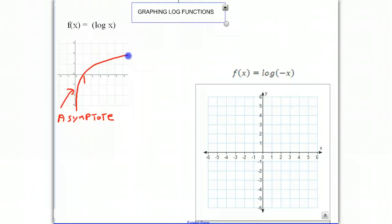So if the x-intercept was at 1, now it's at negative 1, and it's facing the opposite way, but we still have our asymptote as the y-axis. And so there you go.